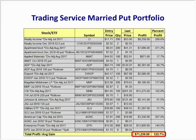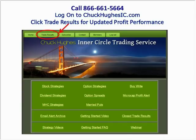We also have a married put portfolio with our trading service. We have a combination of stocks, ETFs, and real estate investment trusts in our married put portfolio. We currently have $71,000 in open trade profits with an average return of 123%. If you want to see the updated profit results for our eight strategies, log on to Chuck Hughes IC, click trade results, and that will give you the updated profit results for the strategies.